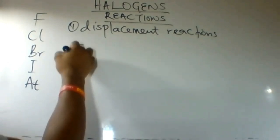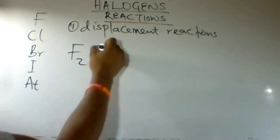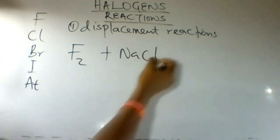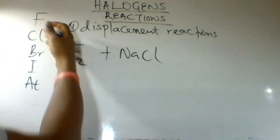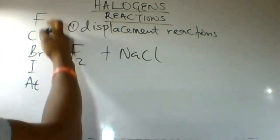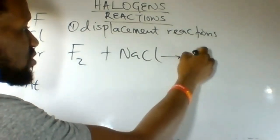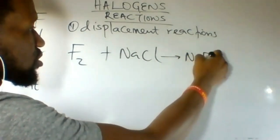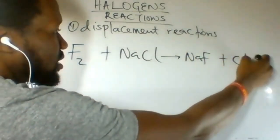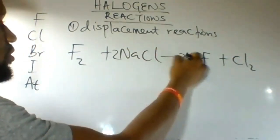If we have a reaction involving fluorine and sodium chloride, fluorine is more reactive than chlorine, so it can displace chlorine from this solution of its salt to form sodium fluoride and chlorine gas. If we balance this out, we get the balanced equation.